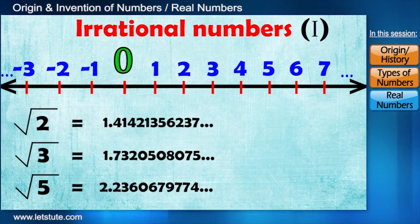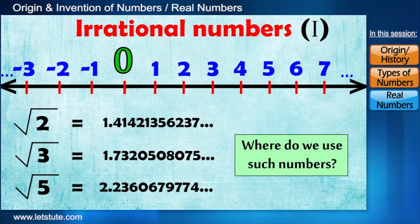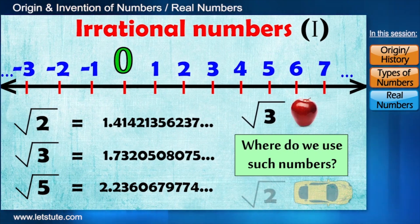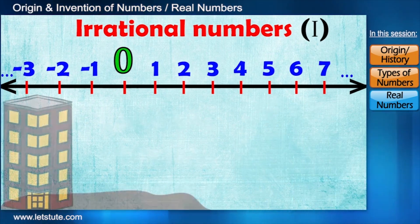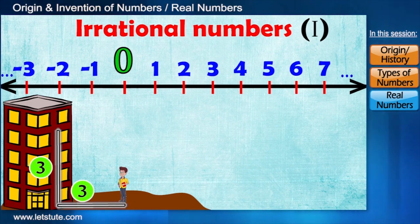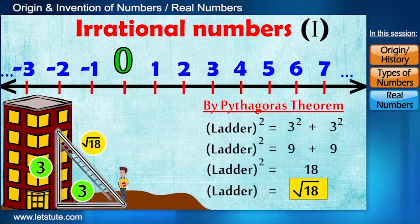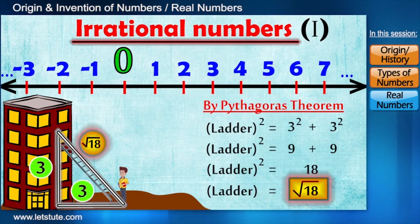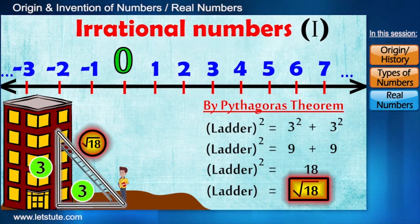But the main question is, where do we use such numbers? Because we never say that we have root 3 apple or root 2 cars. So let us suppose that window of a house is at 3 unit height and you are standing 3 units away on the ground. So here the length of the letter will be an irrational number. I hope you all are getting me.